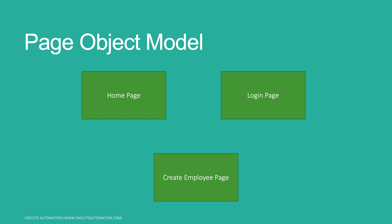So we're going to have a home page, a login page, and a create employee page. We need to somehow abstract the code that we have been writing in the TypeScript or JavaScript language binding, even in the Java page object model, and then we'll see how it actually works. It's a very cool concept. The page object model is something very famous in Selenium, and we can use the exact same idea in Playwright as well.